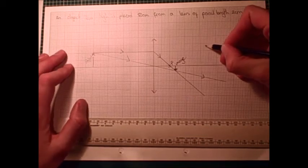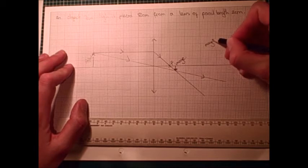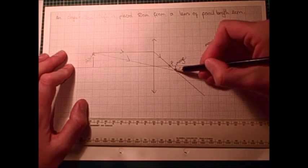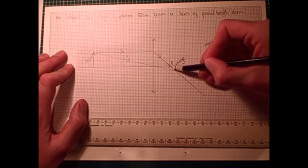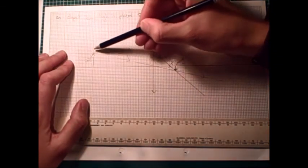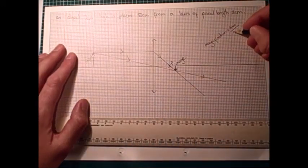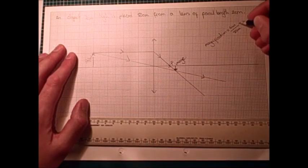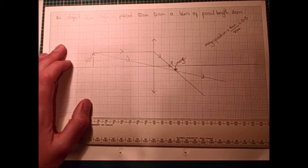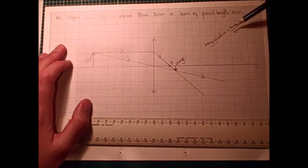We could then go on to work out the magnification. And the magnification we'd get by doing the image height, which in this case we can see is 6mm, divided by the object height, which was 20mm. Which would give us a magnification of 0.3. And the magnification doesn't have any units, because it's a ratio of two distances.